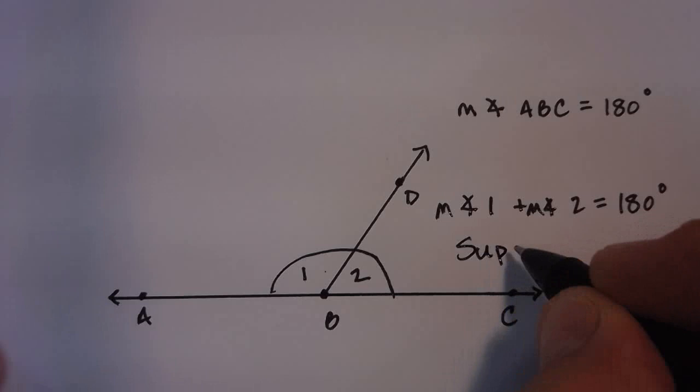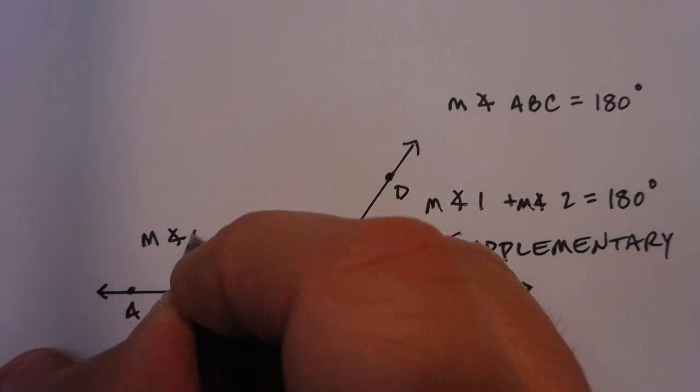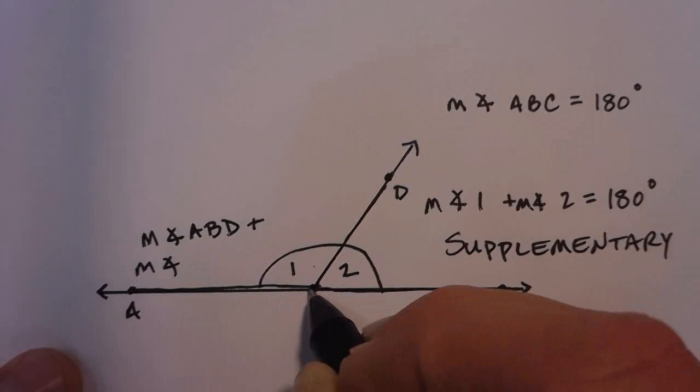So supplementary angles, the measure of angle ABD, which is right here, plus the measure of angle CBD will equal that entire straight angle, which is 180 degrees.